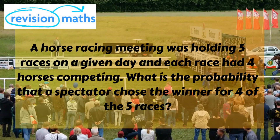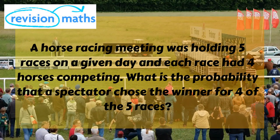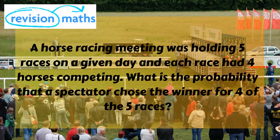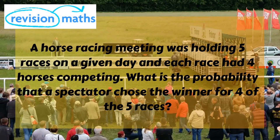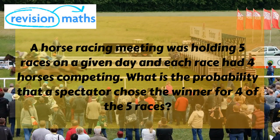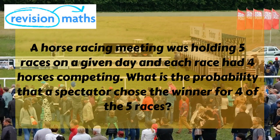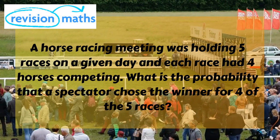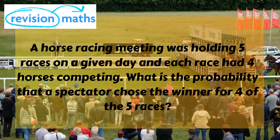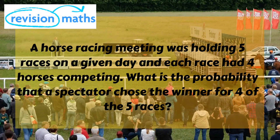Now let's take this example. A horse racing meeting was held with five races on a given day and each race had four horses competing. What is the probability that a spectator chose a winner for four out of the five races? In this scenario we are only looking at two possible outcomes: the spectator gets the winner correct, or the spectator gets the winner incorrect.